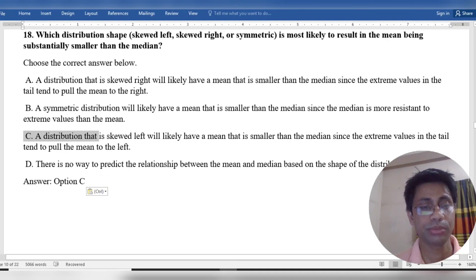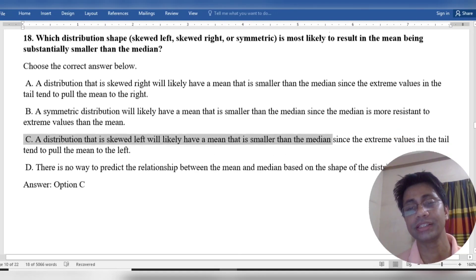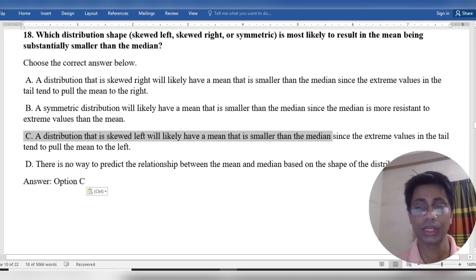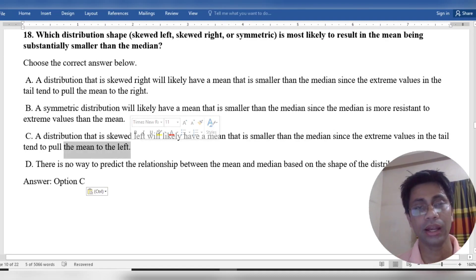A distribution, i.e. skewed left, will likely have a mean that is smaller than the median, since the extreme values in the tail tend to pull the mean to the left.